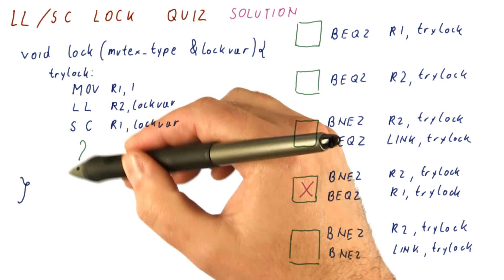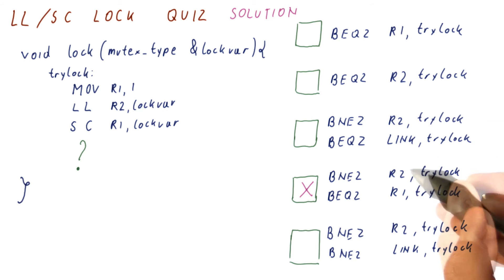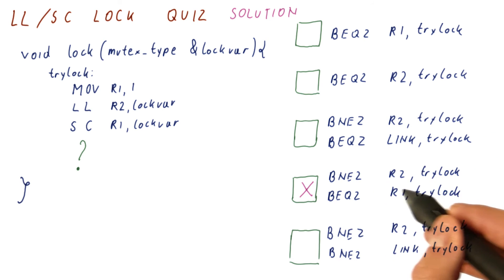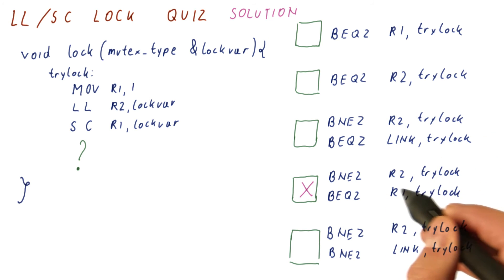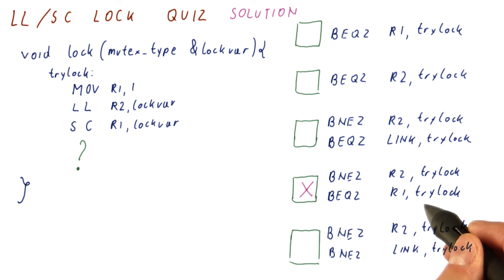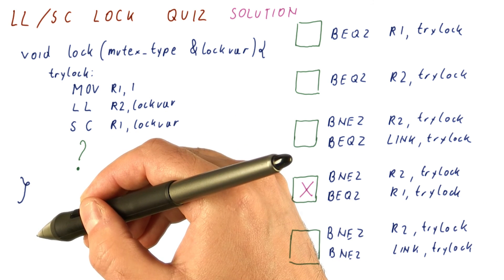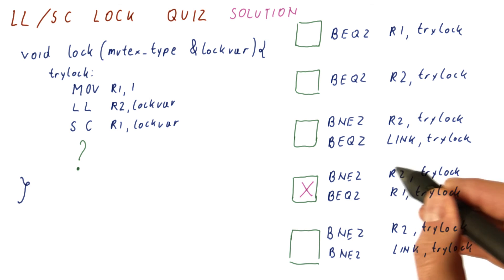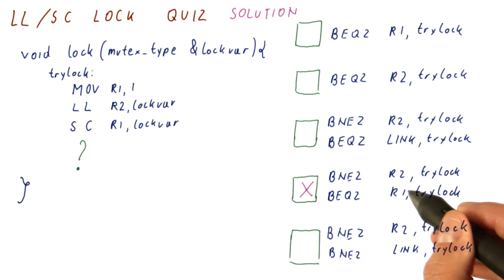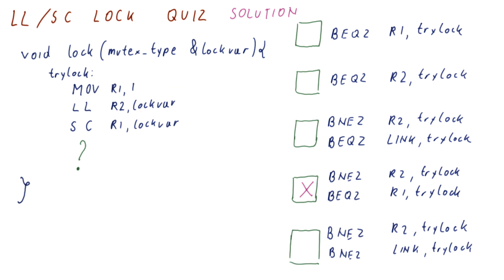So in this lock function, basically what we are doing is: if we saw the lock was free and we managed to store a one into it without anybody interfering, then we acquire the lock. If we saw the lock was busy, we try again. If the lock was free but somebody beat us to it, then again we try again.